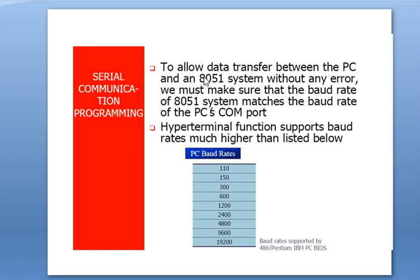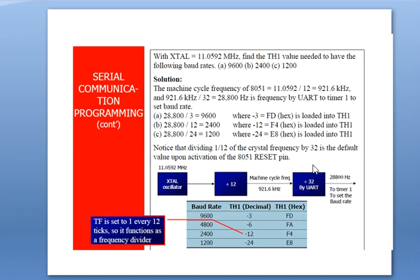For communication between the 8051 and a computer, both must match on a particular baud rate. Available baud rates range from 110 to 19200. We need to check what baud rate the computer system uses and configure the controller to match. An example: given a clock frequency of 11.0592 MHz, we need to calculate the TH1 value to achieve baud rates of 9600, 2400, and 1200.